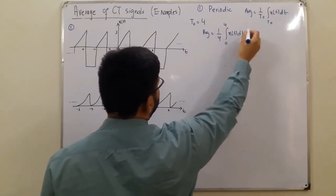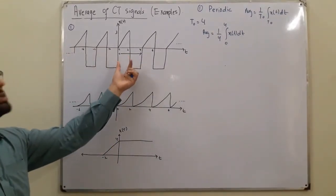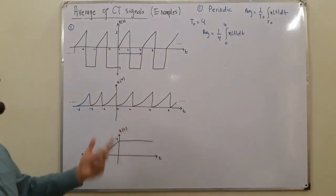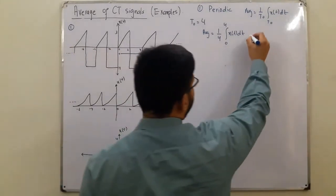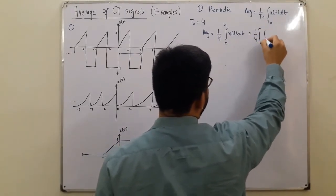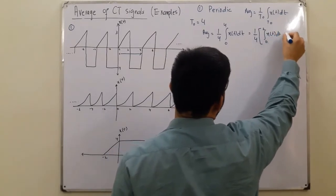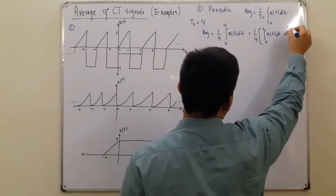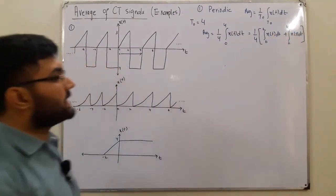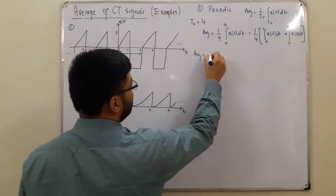But have a look, 0 to 4, now it has two parts. 0 to 2 is a triangle, 2 to 4 is a rectangle. So I could write it as 1 over 4 is taken common, and then you have 0 to 2 x of t with respect to t, and then you have 2 to 4 x of t with respect to t.